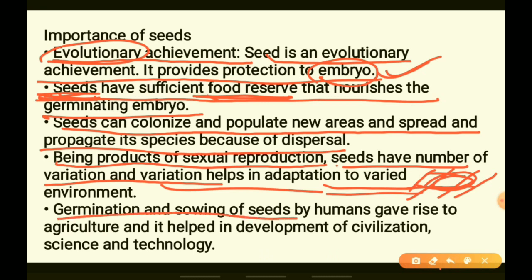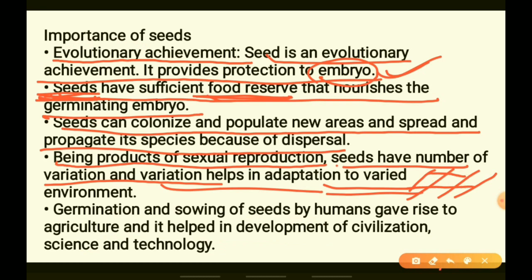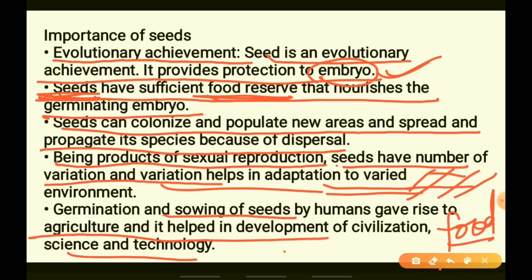Germination and sowing of seeds — when humans purposefully make seeds germinate and sow them for food or nutrition — is known as agriculture.